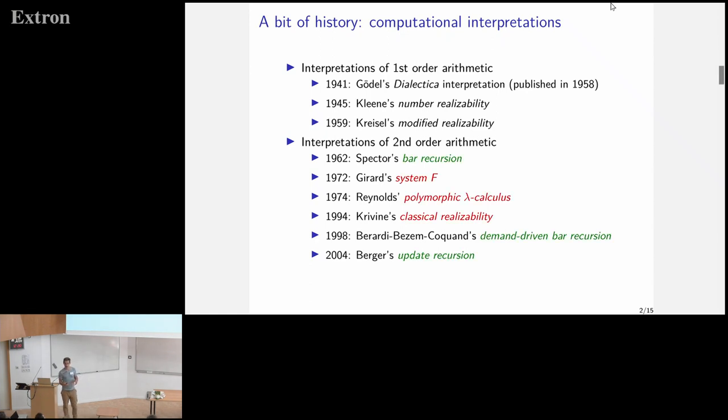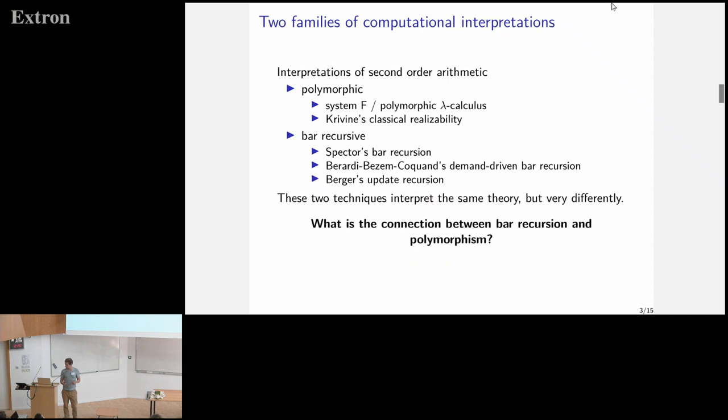What is interesting is that we can differentiate between two families of interpretations of second-order arithmetic. You have the bar recursive ones, which are the green ones, and the polymorphic ones, which are the red ones. These two techniques interpret the same theory, second-order arithmetic, but they are computationally very different. And we don't really know what relates them. That's the question I'm trying to tackle.